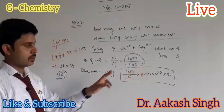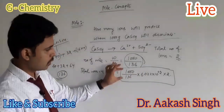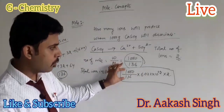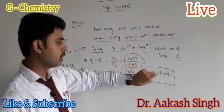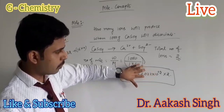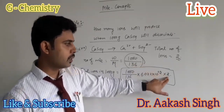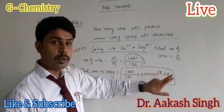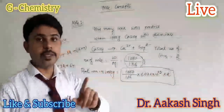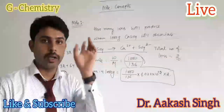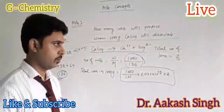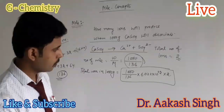This is the answer: the mole value multiplied by Avogadro's number, multiplied by the number of ions present in one molecule.